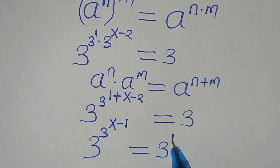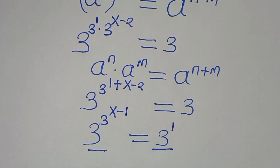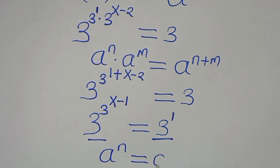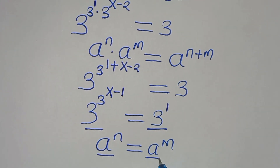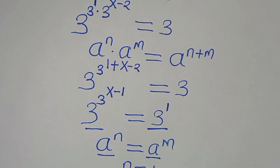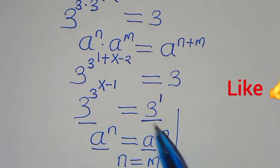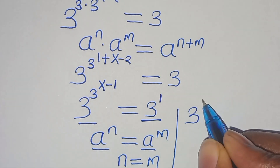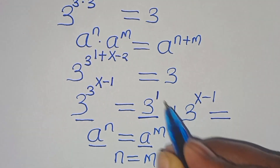Remember, 3 on the right is 3 raised to the power of 1. Since the bases are common, we apply the property: a to the power of n equals a to the power of m implies n equals m. This means 3 to the power of x minus 1 equals 1.